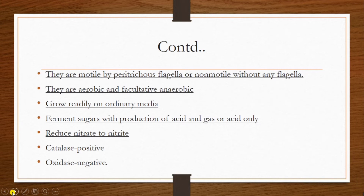They reduce nitrate to nitrite and they are catalase positive. They produce the enzyme catalase, which reduces hydrogen peroxide into hydrogen and releases nascent oxygen. This is a characteristic feature of the family Enterobacteriaceae, and these organisms are oxidase test negative.